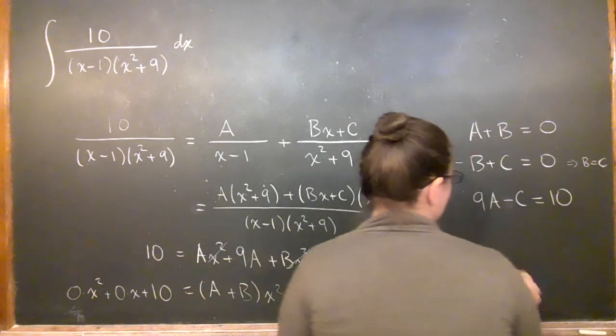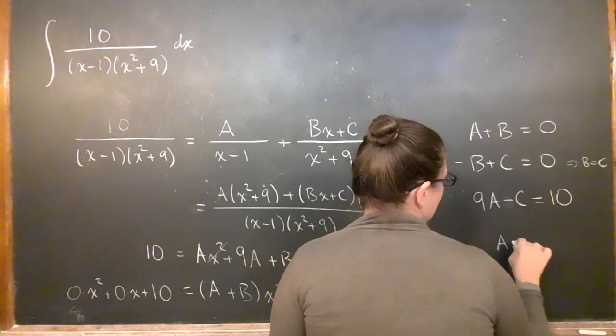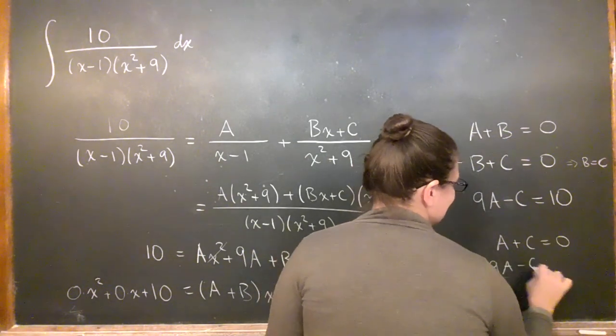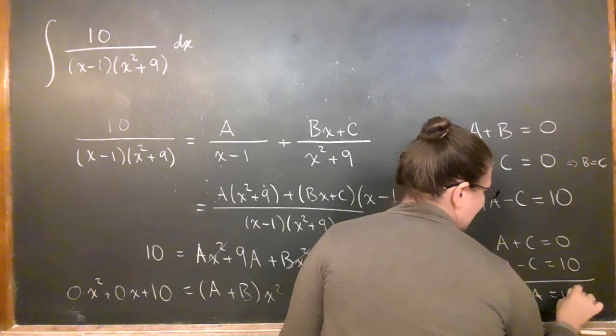And then what I end up is, if I get that, it gets rid of b. So I have a plus c equals 0, and 9a minus c equals 10. That gives me 10a equals 10, right?